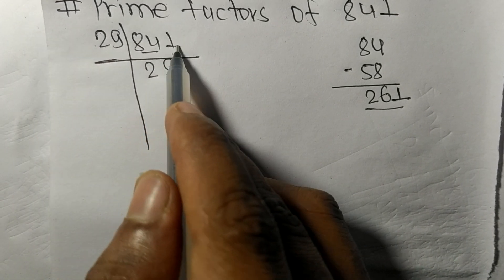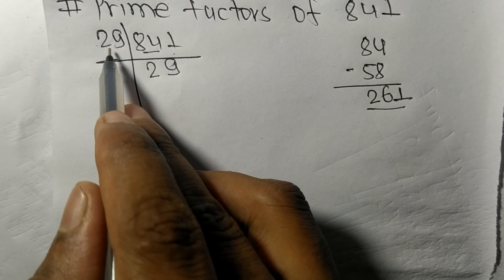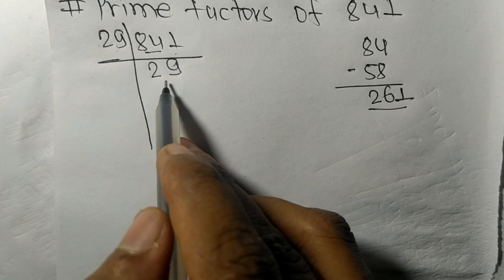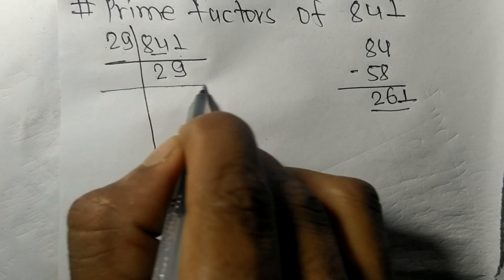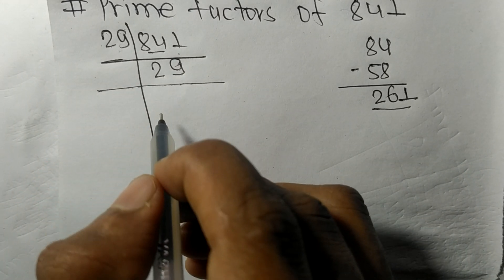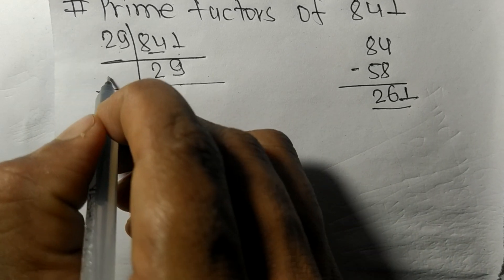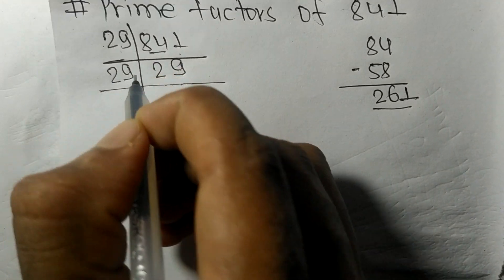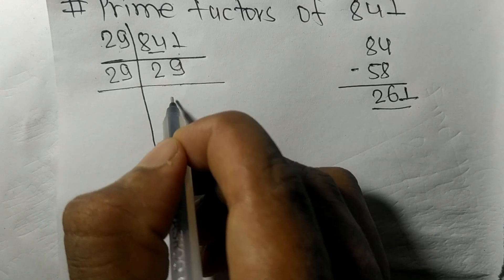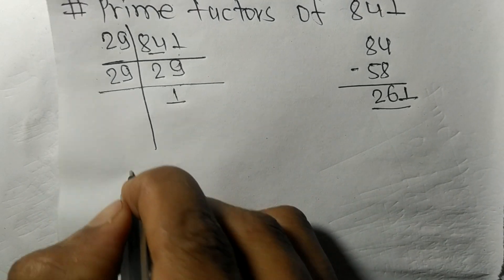So now 29 is a prime number, so it is exactly divisible by 29 only, and on dividing we get 1.